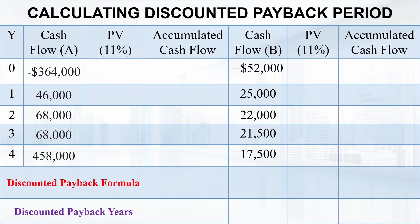Next, we select between projects using the discounted payback period. To calculate it, we first find the present value of each cash flow discounted at 11%. At time zero the payment remains minus 3,64,000. In year 1: 46,000 divided by 1.11 raised to power 1 equals 41,441.